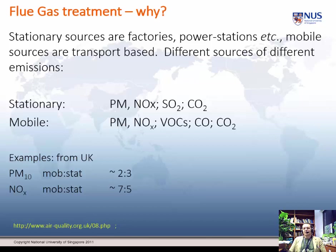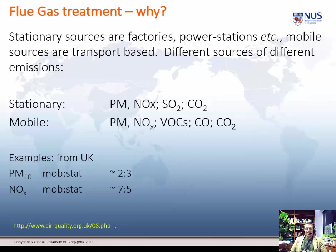This is from the UK, to give you an example of the difference between the two sources. Typically, the mobile to stationary ratio for PM10 is about 2 to 3. For NOx, the same ratio is about 7 to 5. So there are differences between the different types of source, and it's worth bearing that in mind.